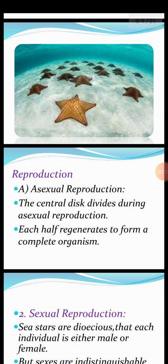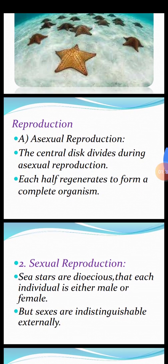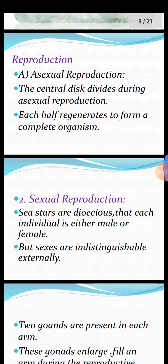The second process is reproduction. There are two methods: asexual and sexual. First, asexual reproduction — the central disc divides during asexual reproduction, and each half regenerates to form a complete organism, that is a sea star.